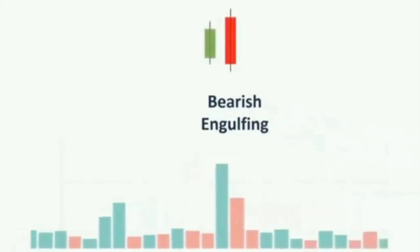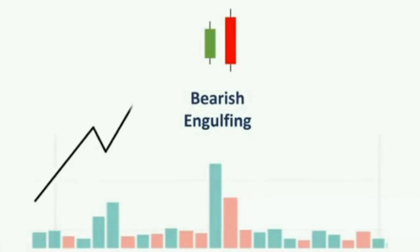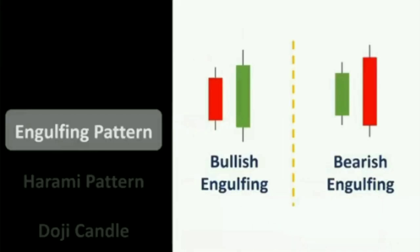The next one is the bearish engulfing pattern. The volume near these two candles is usually higher than other days in the market, which tells us this is a strong reversal candlestick pattern. It is a bearish reversal pattern which indicates that the uptrend in the market will be converted back to the downtrend — meaning the bears will be taking the market down.